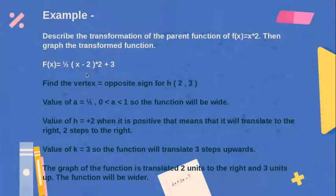we need to find the vertex by taking the opposite sign of h. Here, it's negative 2, so it will be positive 2. And k is 3, so the vertex is (2, 3).